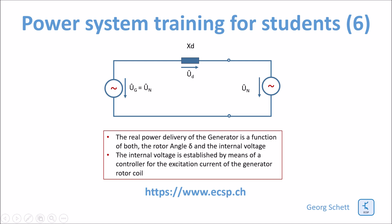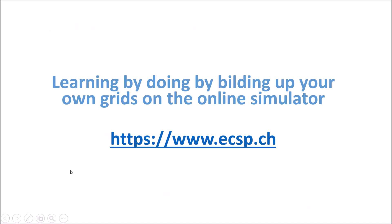The real power delivery of the generator is a function of both the rotor angle and the internal induced voltage of the generator. The internal voltage is established by means of a controller for the excitation current of the generator rotor coil. As usual, you can go to the simulator and build the case and try it yourself to get some hands-on experience — that's good for learning practice.